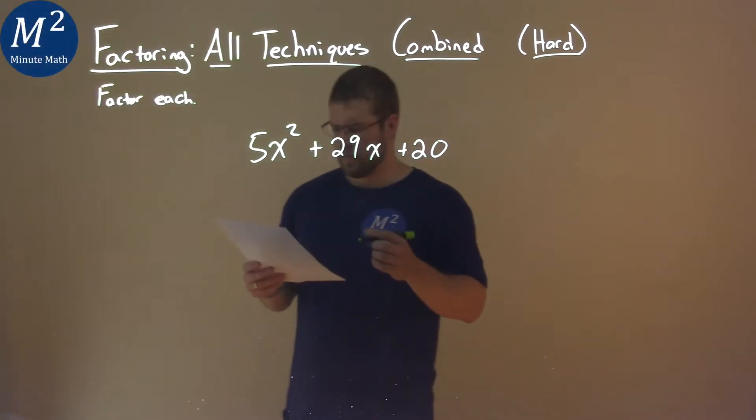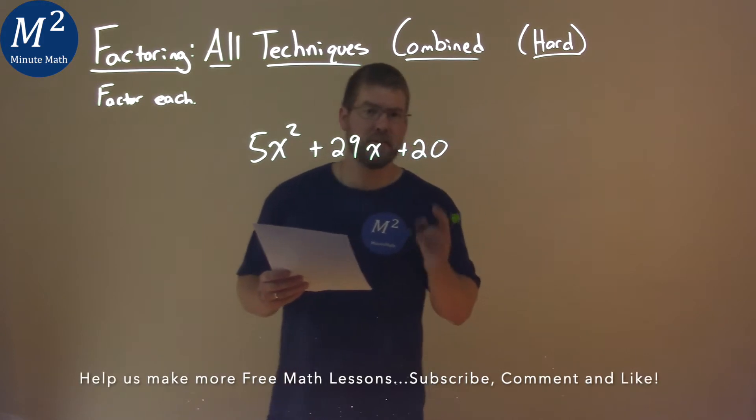We're given this problem right here. 5x squared plus 29x plus 20, and we've got to factor this.